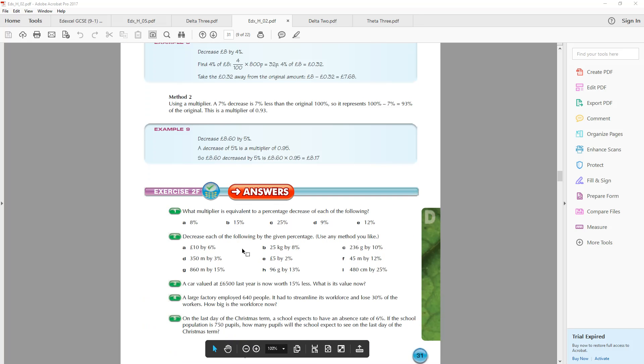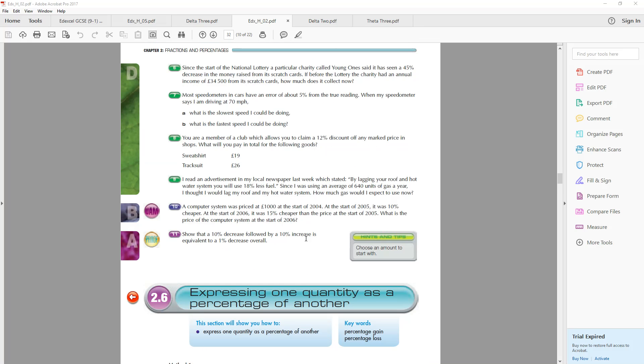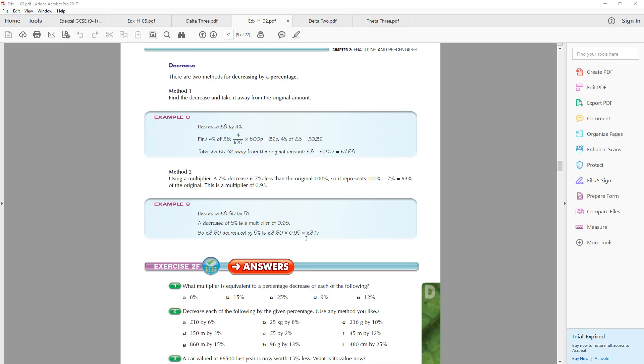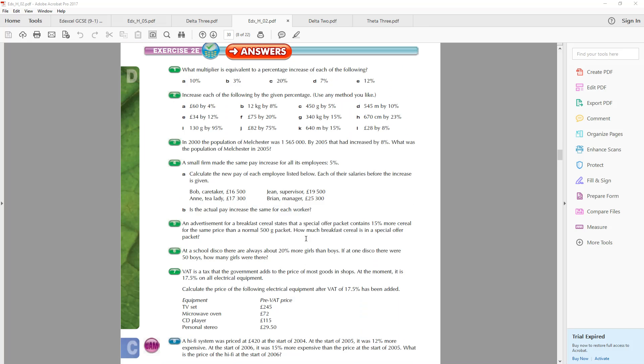Once you do exercise 2E, I want you to do exercise 2F for me as well, because these are percentage decreases. Alright, so start with the increases and then 2E, and when you're finished, do exercise 2F. Good luck, off you go.